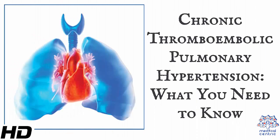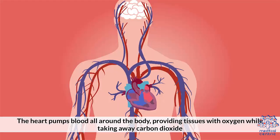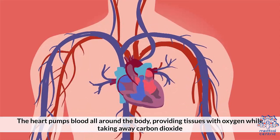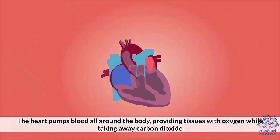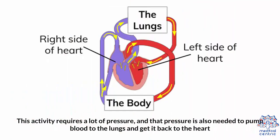Today's topic is chronic thromboembolic pulmonary hypertension — what you need to know. The heart pumps blood all around the body, providing tissues with oxygen while taking away carbon dioxide. This activity requires a lot of pressure, and that pressure is also needed to pump blood to the lungs and get it back to the heart.